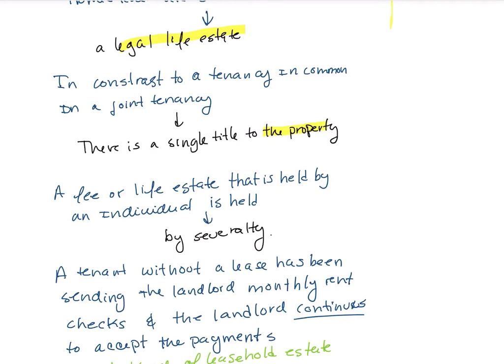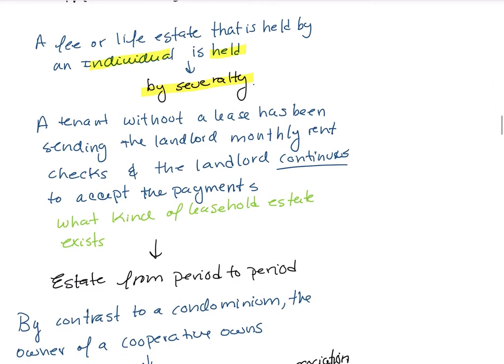A freehold estate held by one individual is held in severalty. A tenant without a lease who has been sending the landlord monthly rent checks, and the landlord continues to accept payment — that is an estate from period to period.